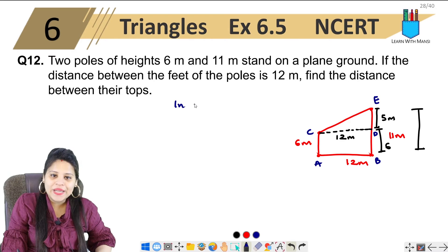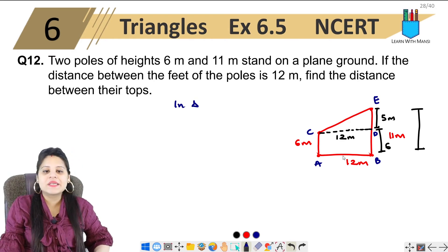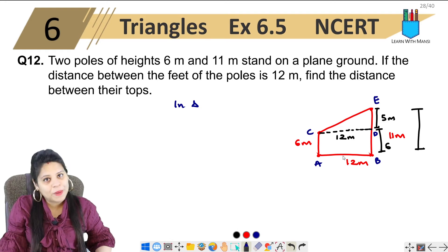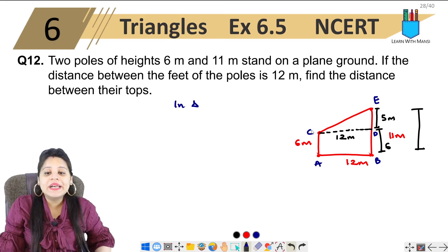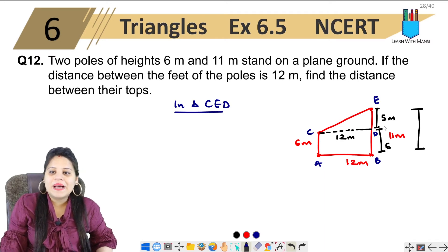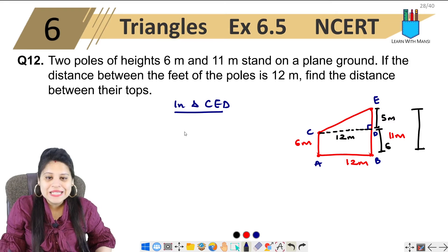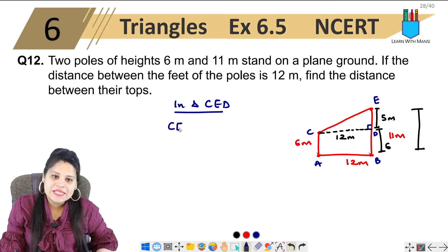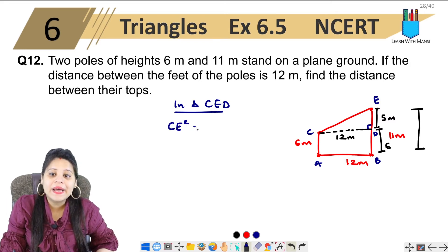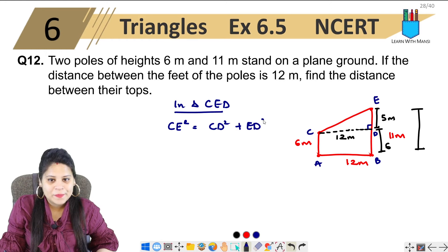So in triangle CED. If we talk about this triangle, it's a 90-degree angle. It's C, E. So, CE, D square equal to CD square plus CD square plus ED square. Clear here.